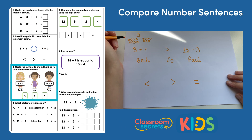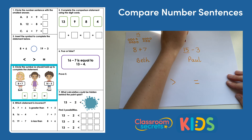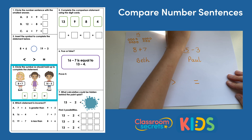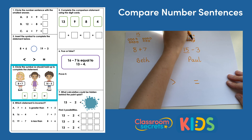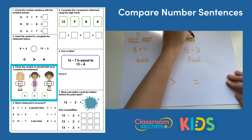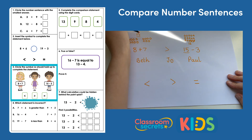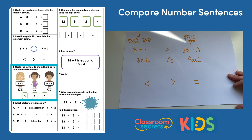And that means that 15 is going to be more than whatever the answer to this calculation is, which means I'm going to need the more than symbol. But let's count to check. So I need 15 subtract three. One, two, three, four, five, six, seven, eight, nine, ten, eleven, twelve. And 15 is more than 12, so that's the correct symbol.